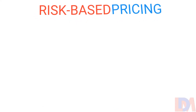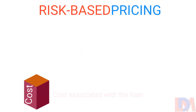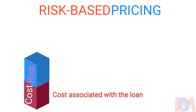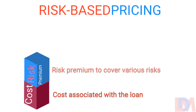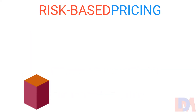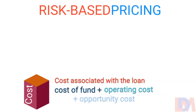The risk-based loan price principally constitutes the cost associated with the loan to be granted to the borrower, plus a risk premium in order to cover various risks assumed by the bank in granting the loan, plus a profit margin. Cost associated with the loan includes cost of fund, operating cost, and opportunity cost.